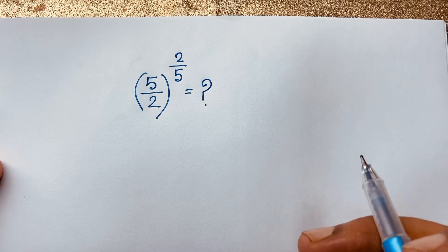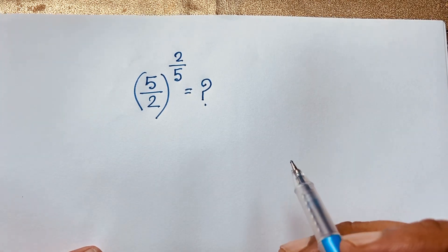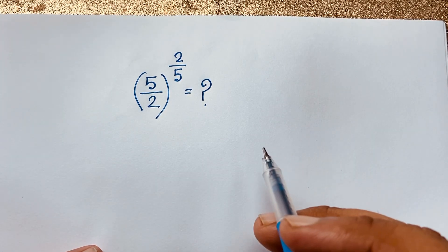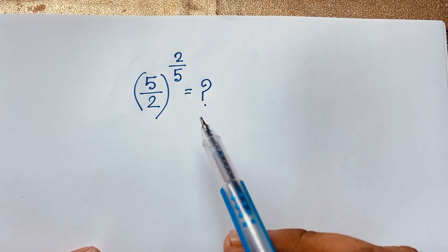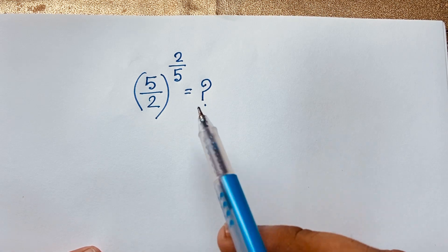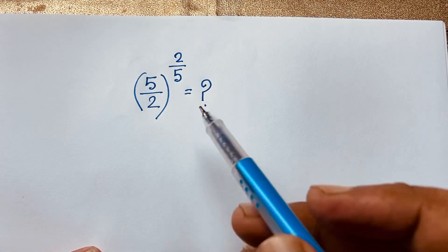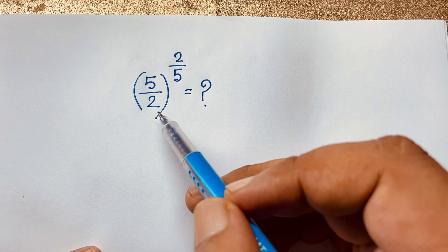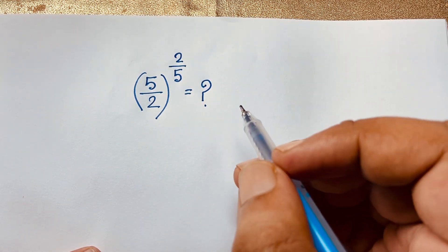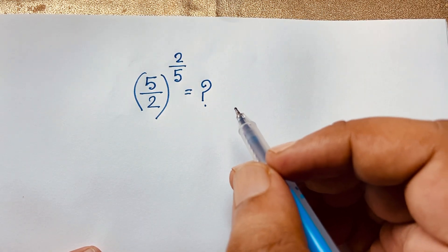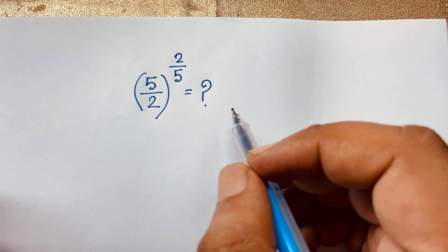Hello everyone, welcome to Rasha's Classroom. Today we have solved an interesting math problem: how to solve this Harvard intense exam question? It will be 5 over 2, raised to the power of 2 over 5 — what does it equal? How do we solve this interesting math question?